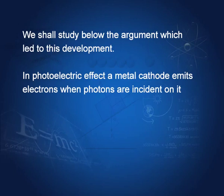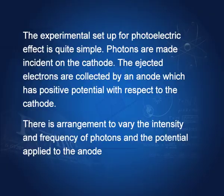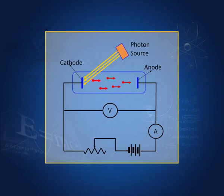In the photoelectric effect, a metal cathode emits electrons when photons are incident on it. The experimental setup is simple: we have a cathode on which we bombard electromagnetic waves or photons. If the energy in these photons is sufficient, electrons are emitted by the cathode and captured by the anode, which has a positive potential. A voltmeter measures the potential difference between cathode and anode, and an ammeter measures the photoelectric current.